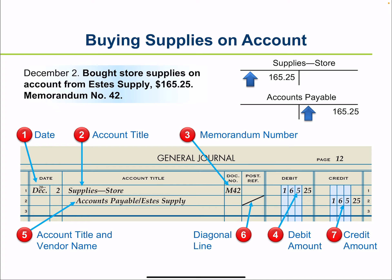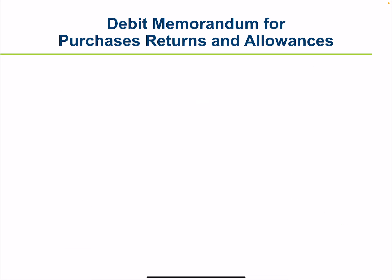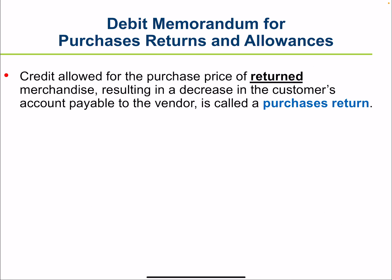Then write the credit amount in the credit column. Customers generally do not want to keep merchandise that is inferior in quality, different from what they ordered, or damaged when received. A credit allowed for the purchase price of returned merchandise, resulting in a decrease in the customer's accounts payable to the vendor, is called a purchase return.